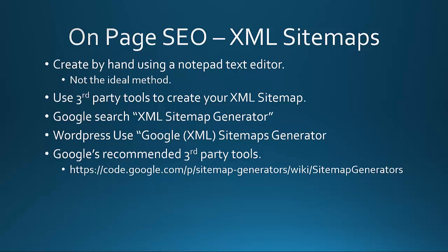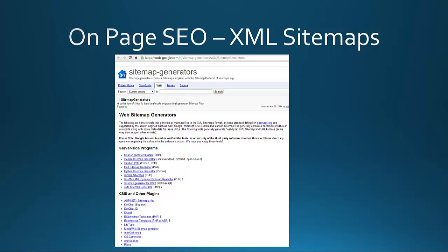WordPress also has the Google XML Sitemaps plugin, which you can find within the WordPress plugins directory. If you search for "XML sitemap generator" you can find tools that will spider your website and put it into the proper format automatically, which is the ideal method because doing it by hand is a painful process that can lead to errors. Google also recommends third-party tools. You can find recommended tools at code.google.com/p/ within Google Webmaster Tools.